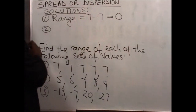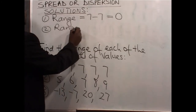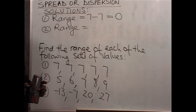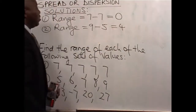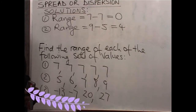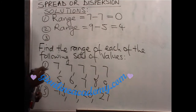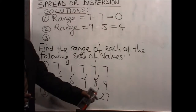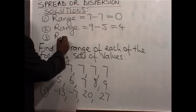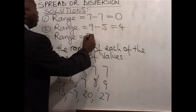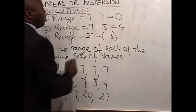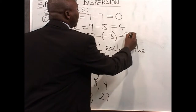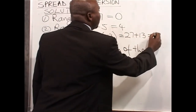For the second set, the range by definition is the highest value minus the lowest value. The highest value we have is 9, and the lowest value is 5. So the range will be 9 minus 5, which is 4. In the third set, the lowest value is negative 13 and the highest value is 27. So the range will be equal to 27 minus negative 13. Since minus minus gives a positive, that will mean 27 plus 13, so the range in this case will be 40.